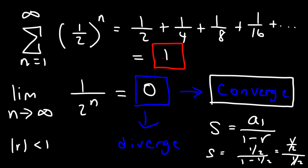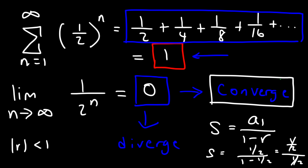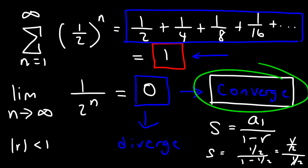If you take 1/2 and add 1/4 you get 0.75; add 1/8 and you get 0.875; plus 1/16 gives 0.9375; plus 1/32 gives 0.96875. If you keep adding each successive term, you get closer and closer to 1, and as you go to infinity the sum approaches 1. Because this infinite geometric series has a finite sum, the series converges. You can use the divergence test to quickly tell if a series will diverge when the limit doesn't equal 0, but if it equals 0 you need another test.